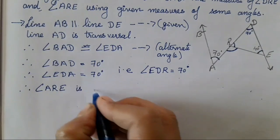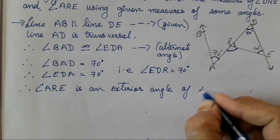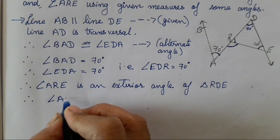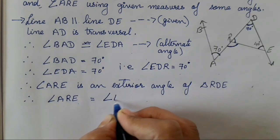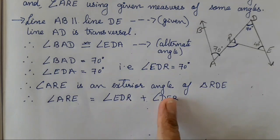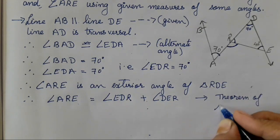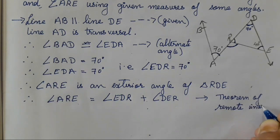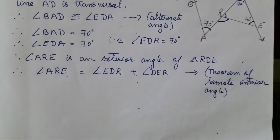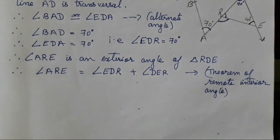Angle ARE is an exterior angle of triangle RDE. By the exterior angle property — specifically the remote interior angle theorem — angle ARE equals angle EDR plus angle DER. Reasoning is very important: every statement needs a justification.